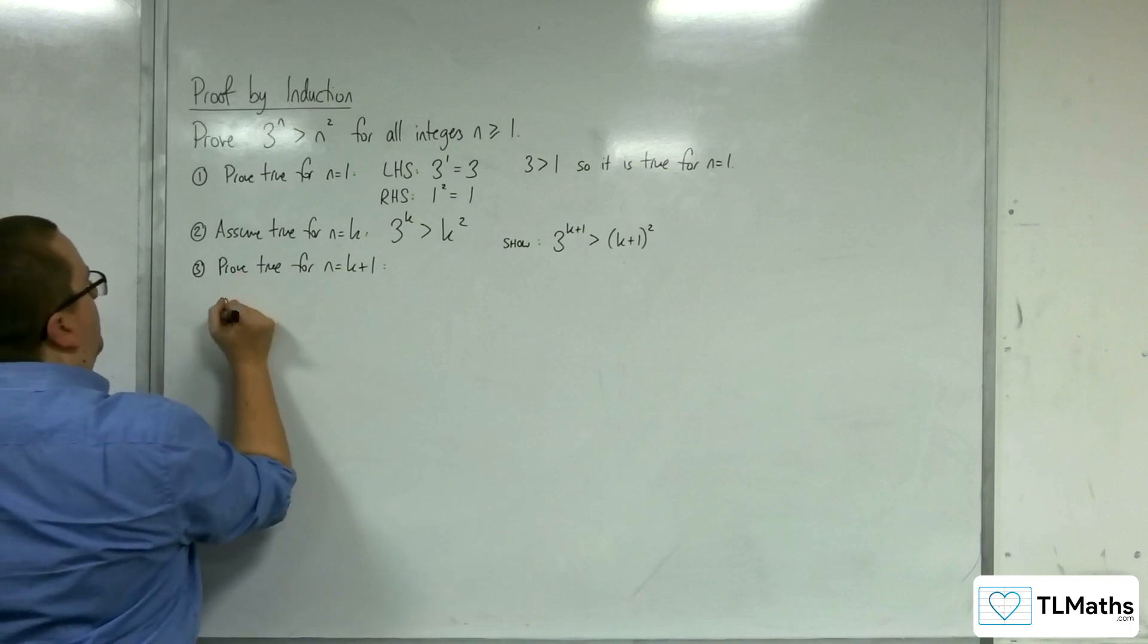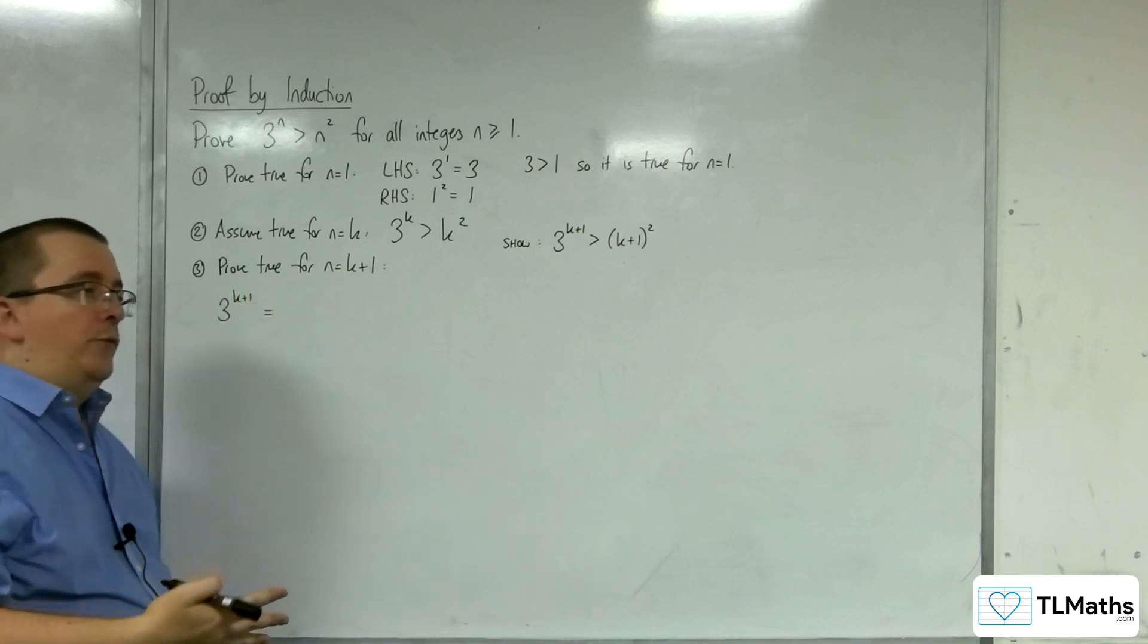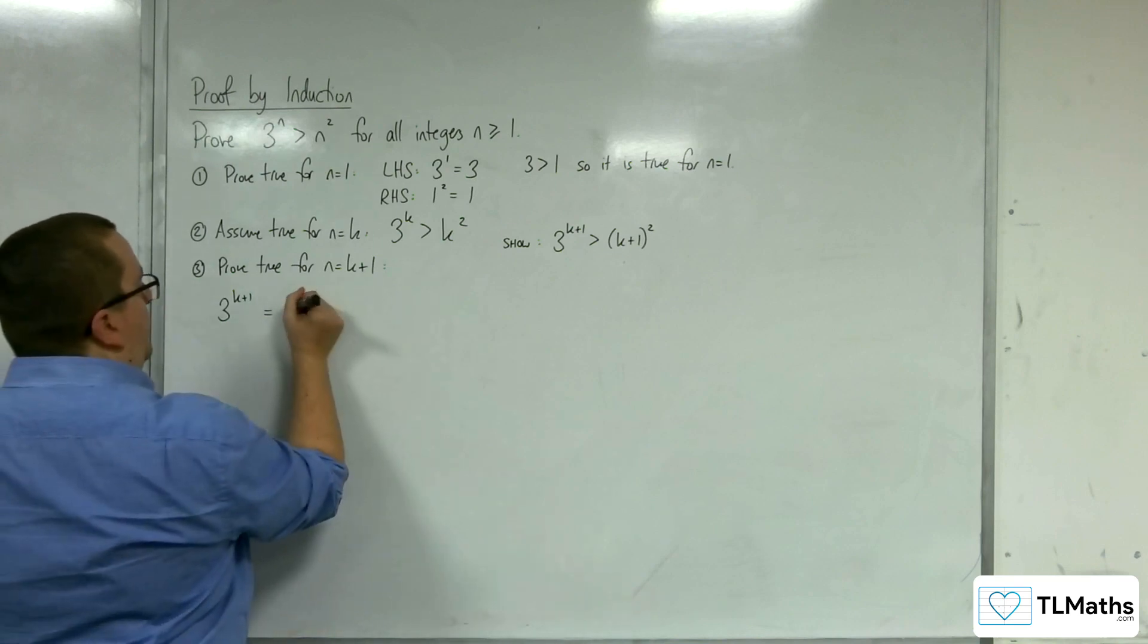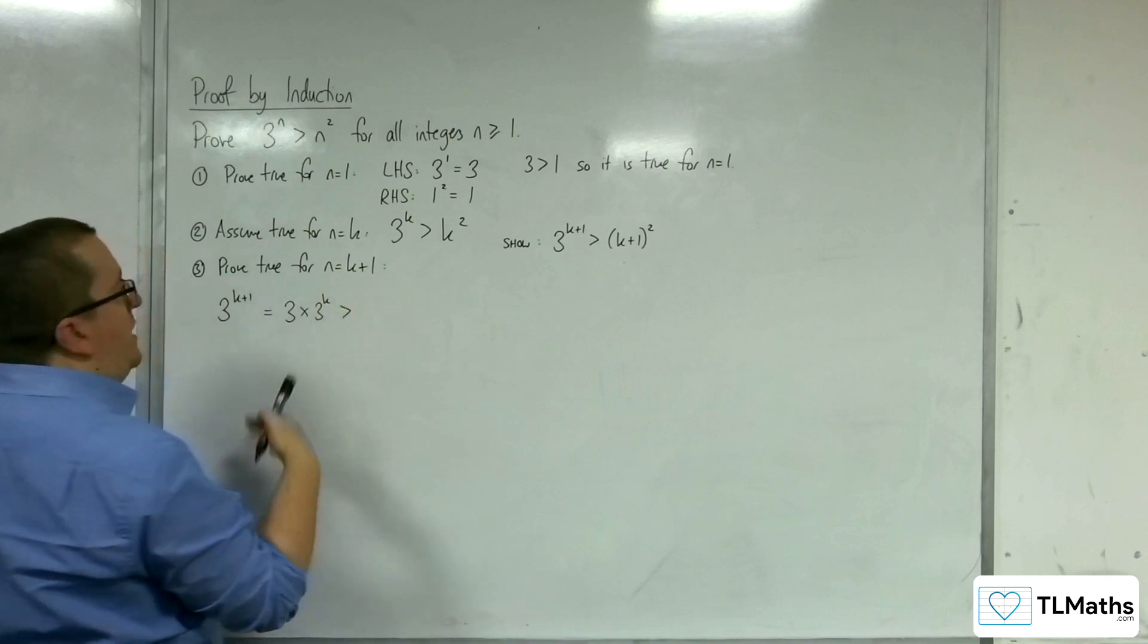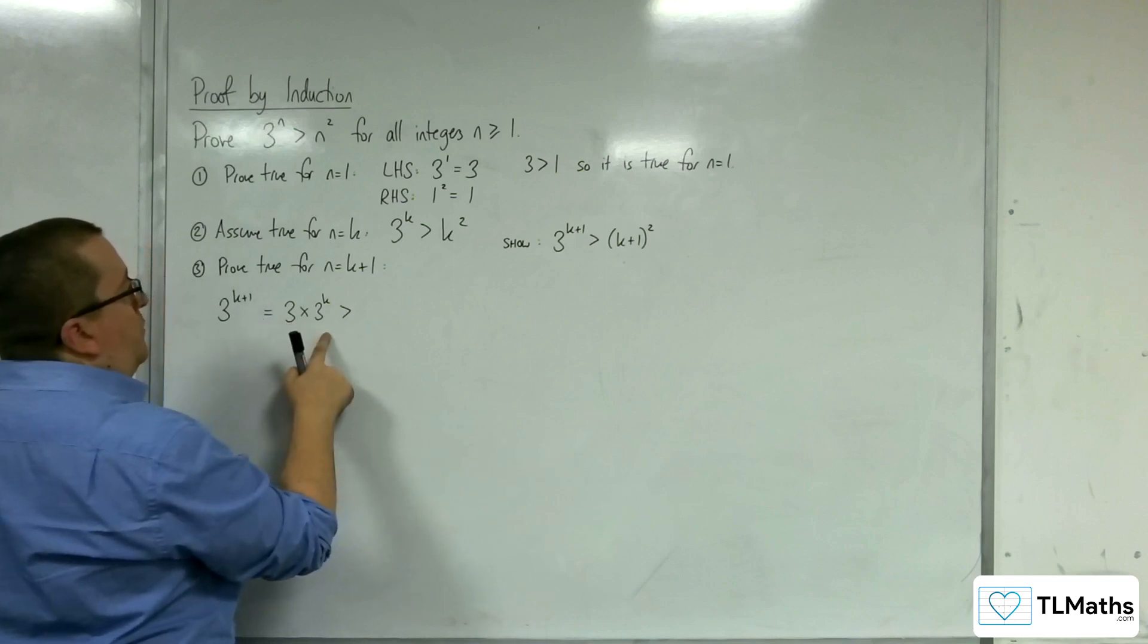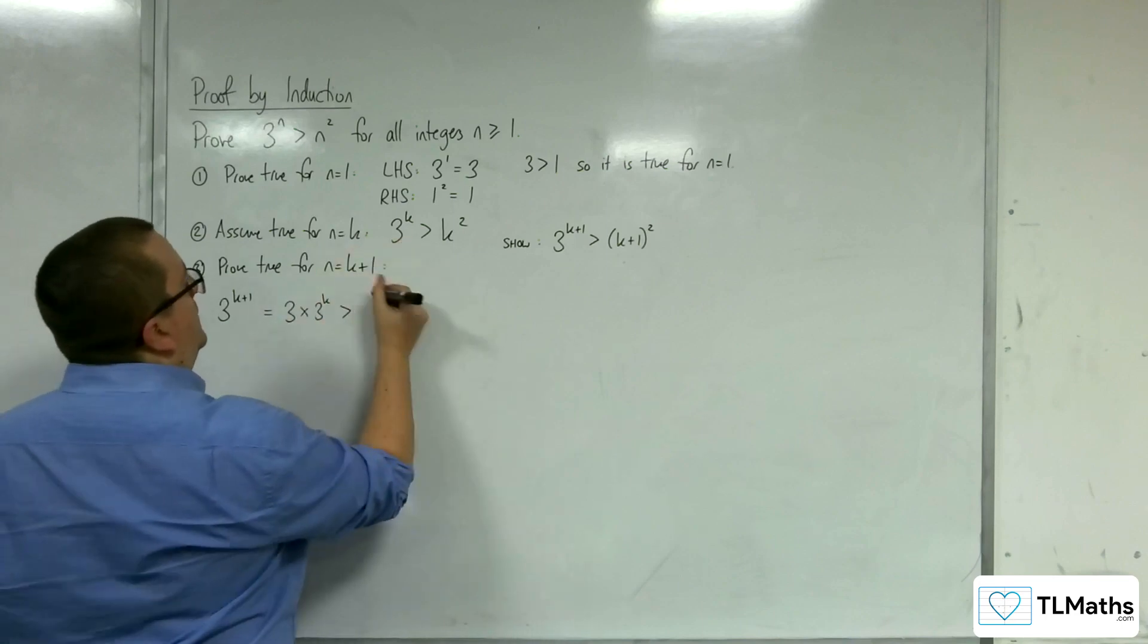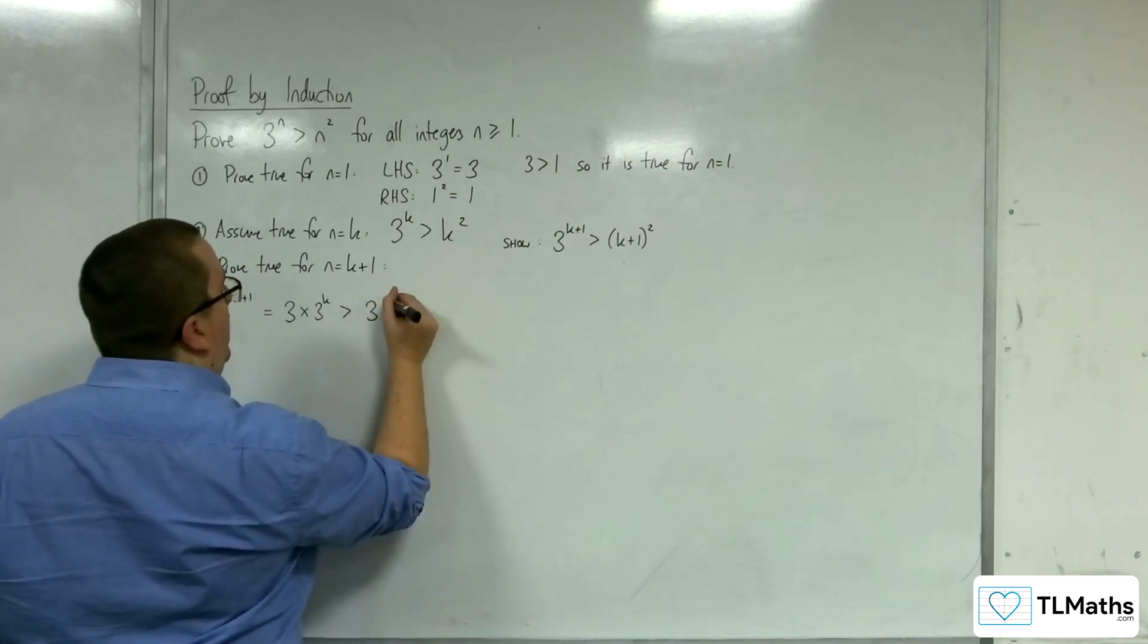If we start off with 3 to the k plus 1, in exactly the same way as we showed in the previous video, this is 3 to the k times 3 to the 1, so it's the same as 3 lots of 3 to the k. And by our assumption from step 2, if we've got 3 lots of 3 to the k, we assume that that's greater than 3 times k squared.